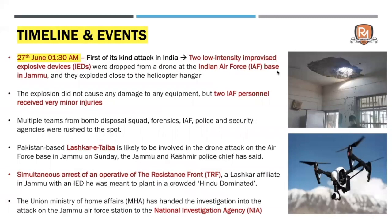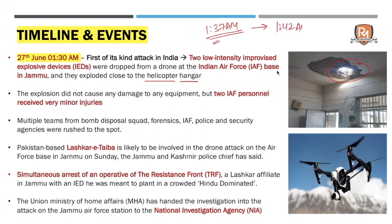Let us first understand the incident that happened on the 27th of June — what exactly was the timeline. On 27th June, close to midnight at around 1:37 a.m., the first explosion went off near a helicopter hangar. Thankfully there was no damage to any kind of equipment. The second explosion happened close to 1:42 a.m. — so within a gap of five minutes, two explosions happened back to back. Immediately the bomb disposal squad, forensics department, police and security all rushed to the spot.